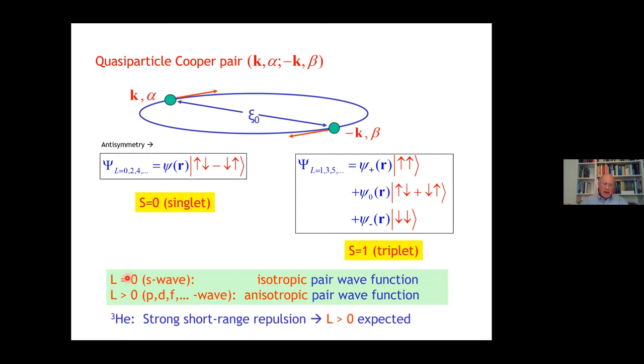For L equal to zero s-wave, we have an isotropic pair wave function. For L larger than zero, it's called P or D or F wave pairing, the pair wave function is anisotropic. Immediately after BCS paper, in the Soviet Union, it was suggested that helium-3 is also unstable, but because of strong hardcore repulsion, the pairing is in an L larger than zero state.